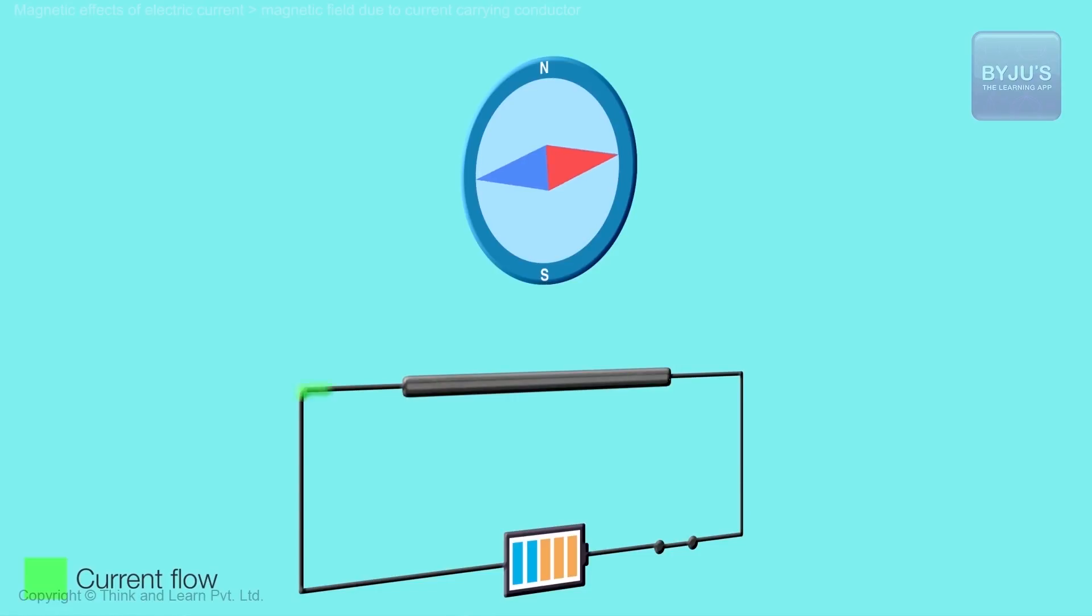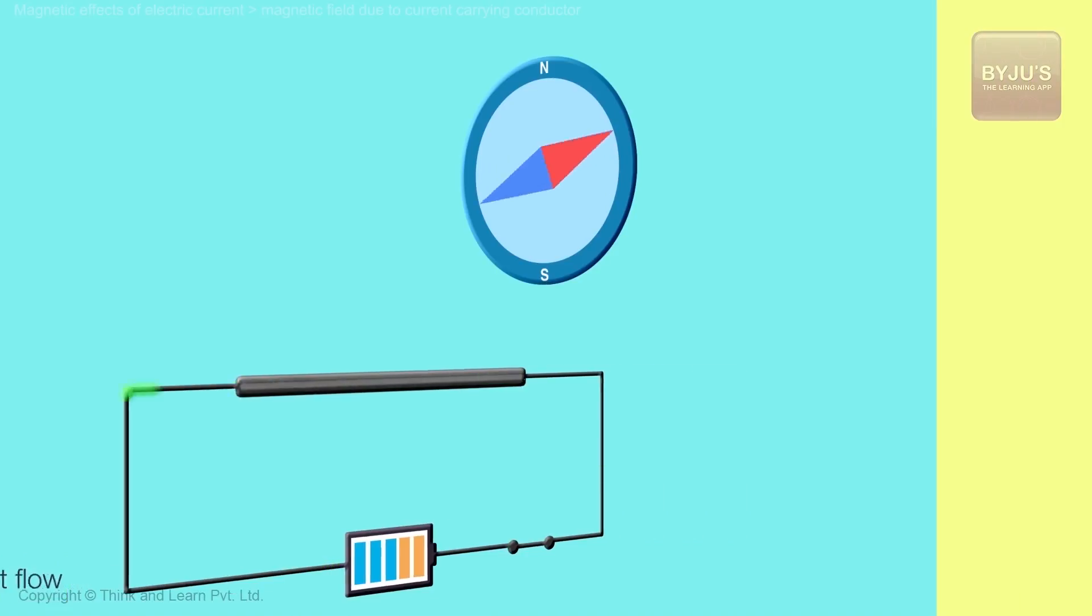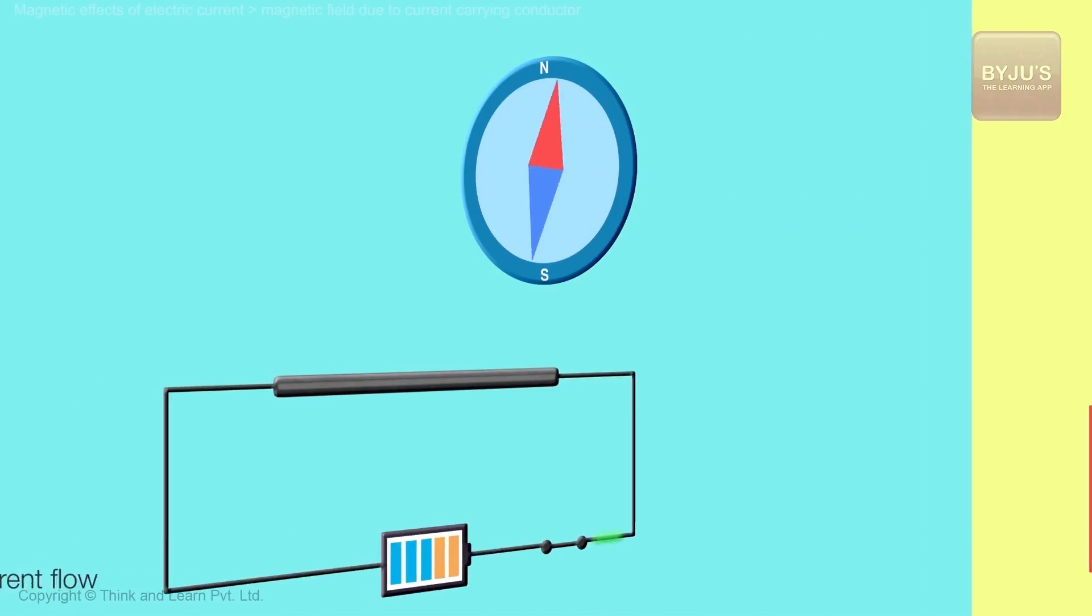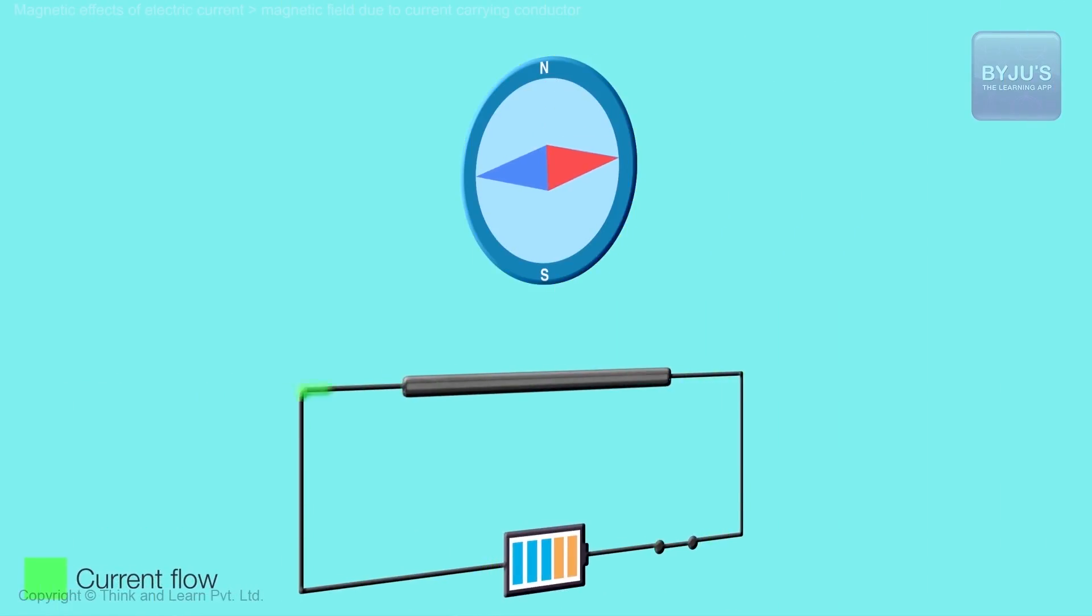And we all know that this happens when you take a bar magnet next to it. But there is no bar magnet here. There is a wire carrying current and this magnetic compass is beginning to turn next to that wire. So this was very fascinating.